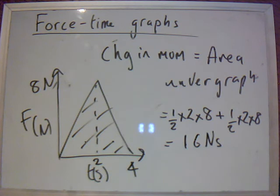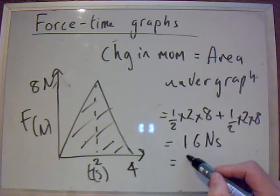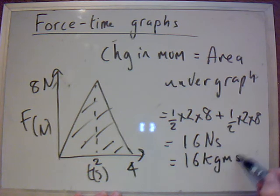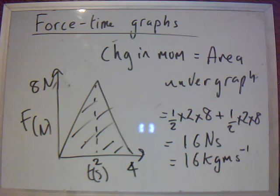So, the change in momentum is 16 Newton seconds, or that's the same as 16 kilograms meters second minus 1. So, if we knew the initial velocity, say the initial velocity was 0, we can find the final velocity by looking at the change in momentum.